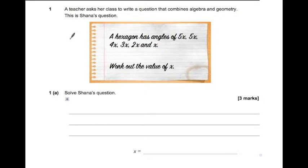So question one. The teacher asked her class to write a question that combines algebra and geometry. This is Shanna's question. A hexagon has angles 5x, 5x, 4x, 3x, 2x and x. Work out the value of x.